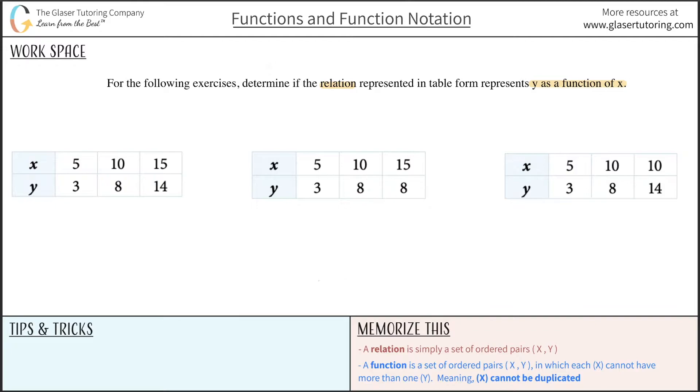Let's see what it says to be then a function. So it says now at the bottom, a function is a set of ordered pairs x, y, which means at a minimum, it's a relation. Or I should say that a function is a specific relation where each x cannot have more than one y, meaning x cannot be duplicated.